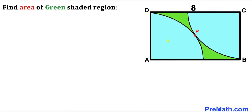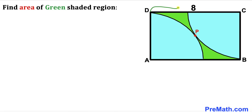Welcome to Pre-Math. In this video we have two identical quarter circles fully inscribed in a rectangle ABCD, such that A and C are the centers of these quarter circles and they are tangent to each other at point P. Moreover, one of the side lengths of rectangle ABCD is 8 units, and our task is to calculate the area of the green shaded region — this area and this area combined.